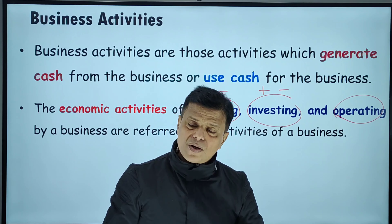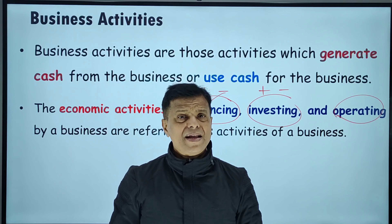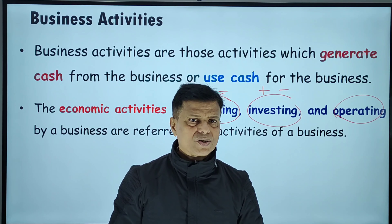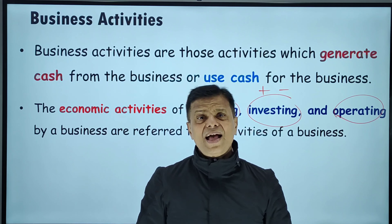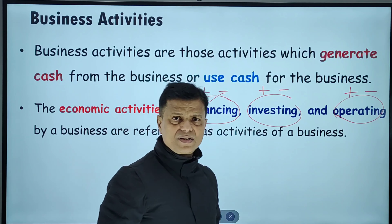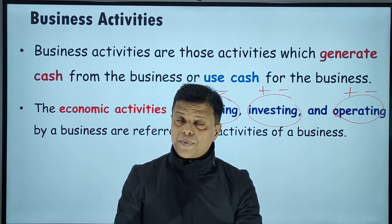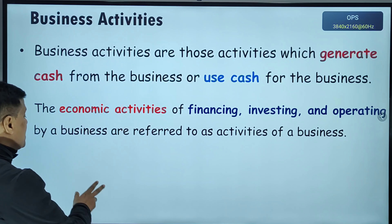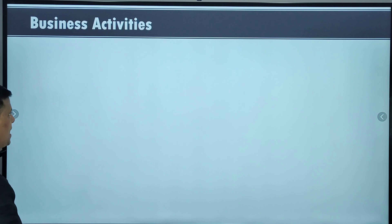Operating activities are those activities done on a regular basis. For example, in a restaurant business, buying food materials and processing food for customers daily is an operating activity. Buying and selling done on a regular basis — selling goods is an inflow of money and purchasing goods is an outflow of money. So there are three types of business activity in a business organization.